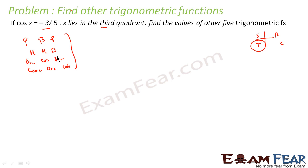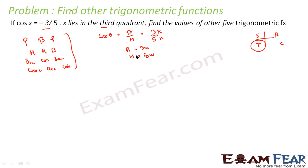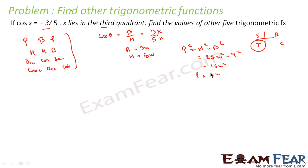We see cos theta is equal to b by h. So cos equals 3 by 5 — we take the values without signs for now. So b is equal to 3x and h is equal to 5x, because b by h equals 3 by 5. Using the Pythagorean theorem: h² minus b² gives p², so 25x² minus 9x² equals 16x², meaning p equals 4x.